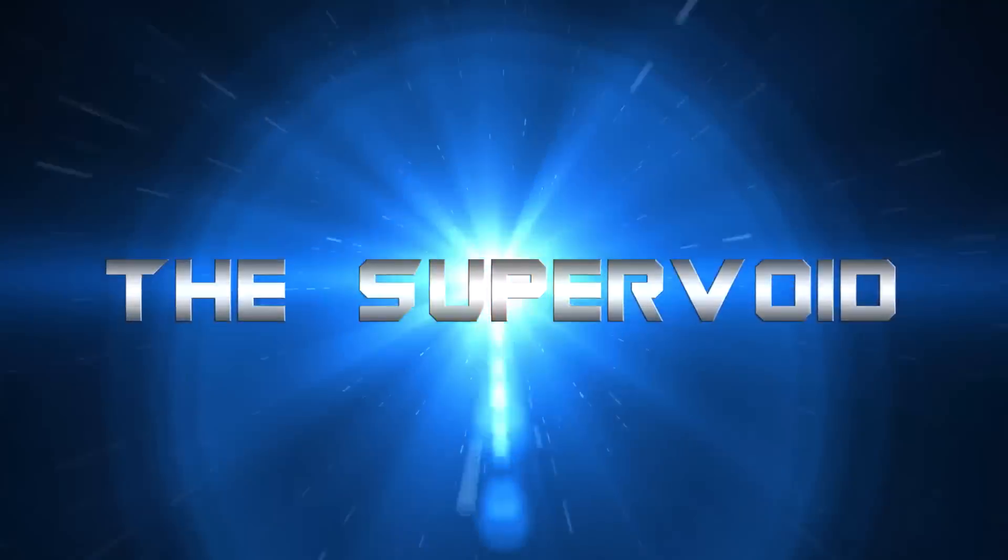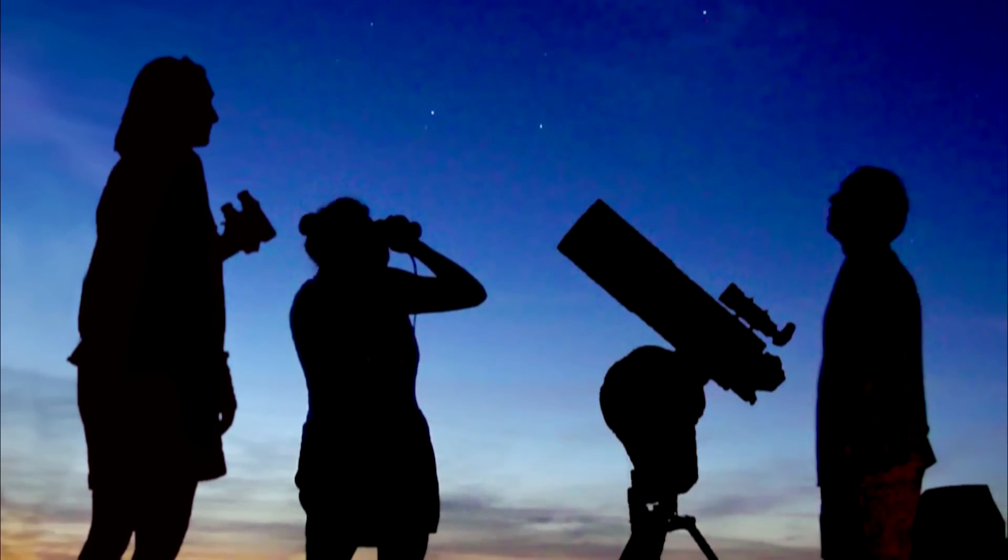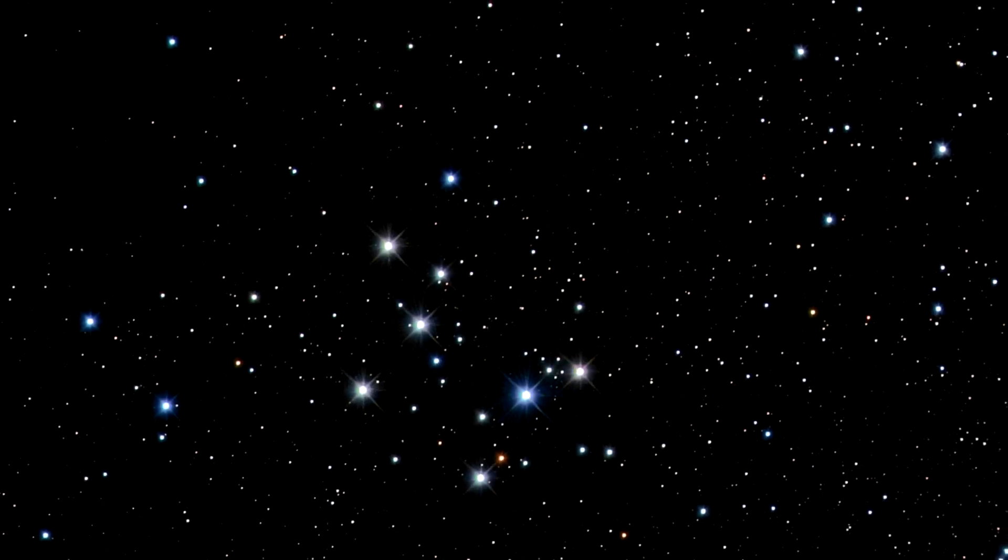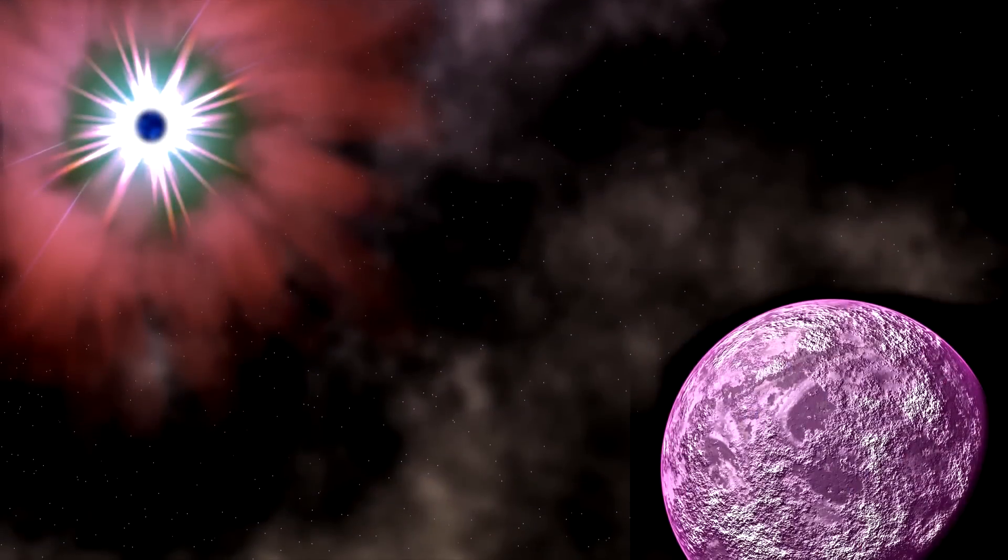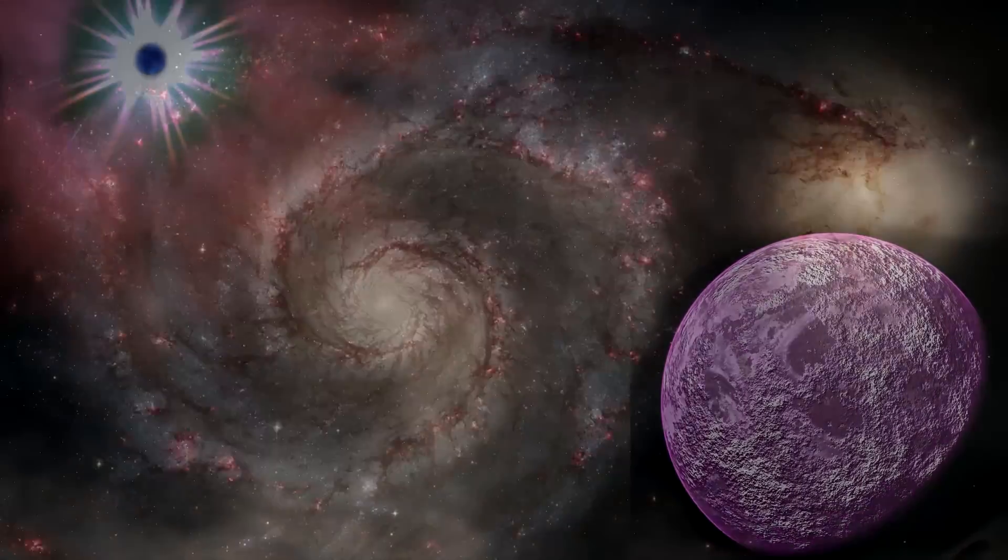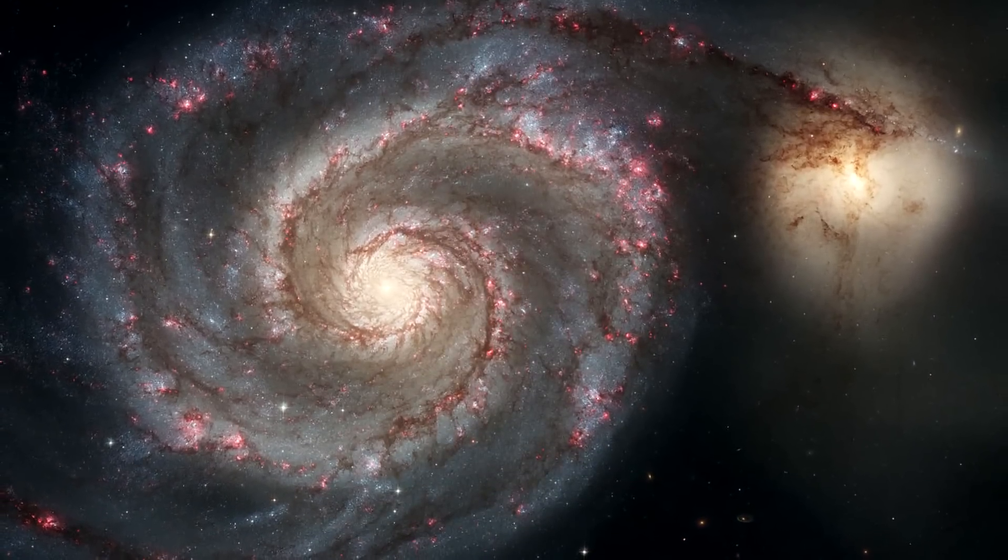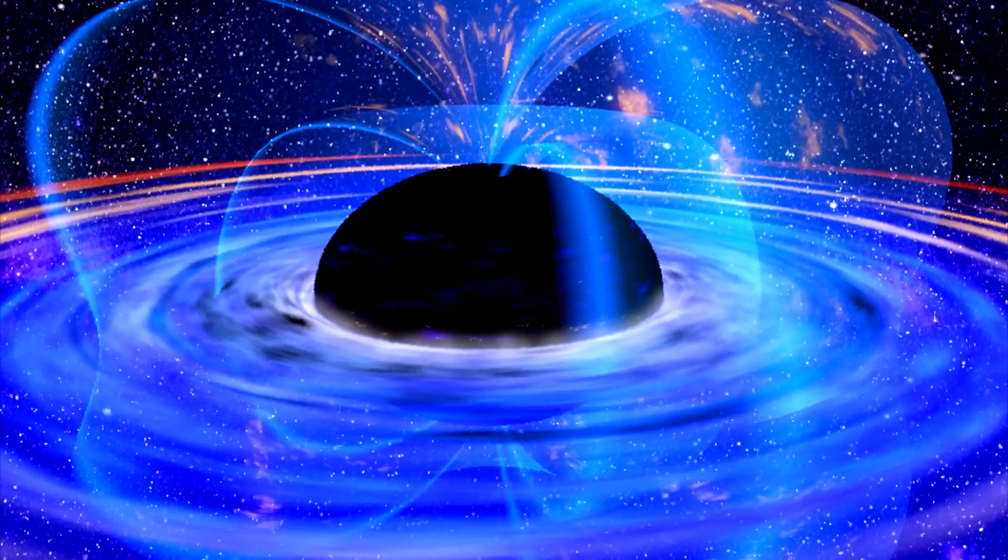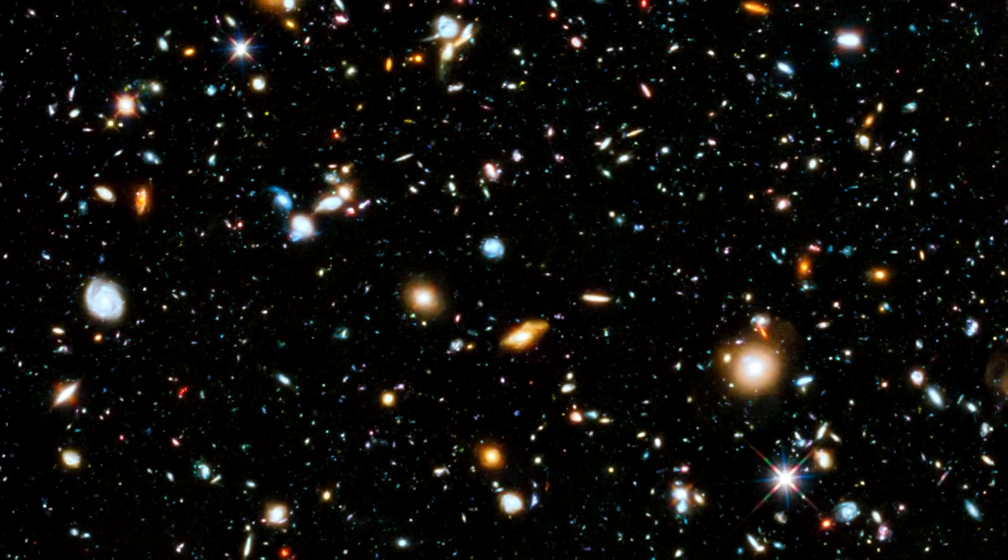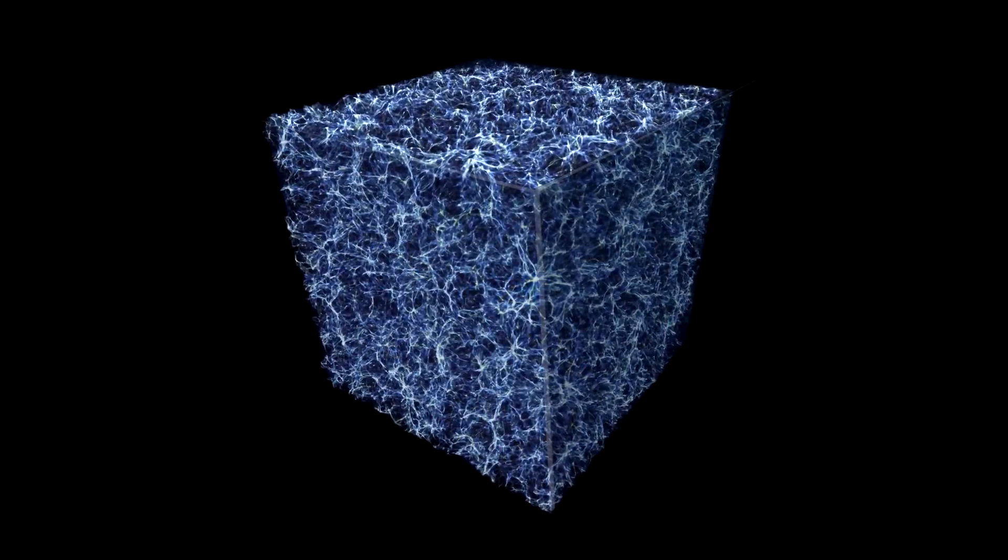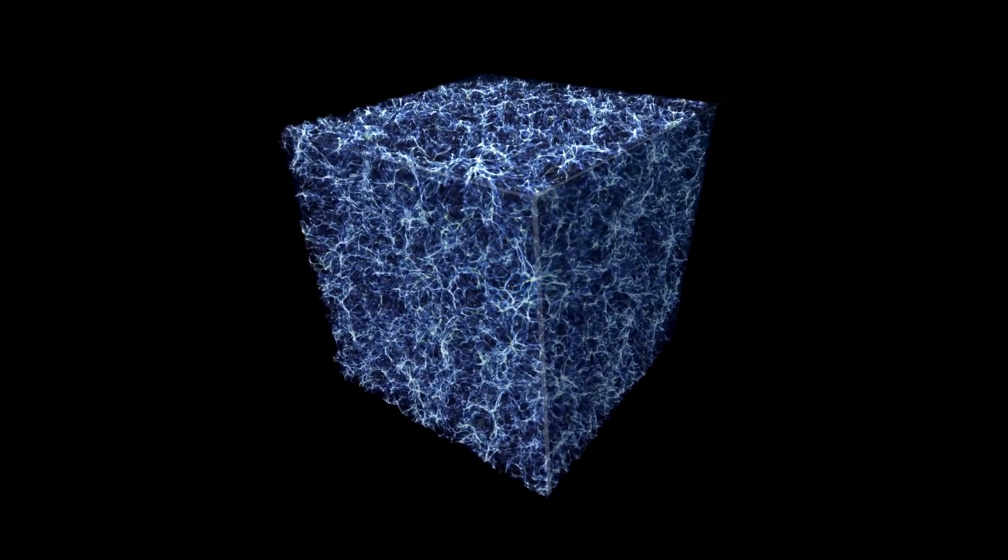The Supervoid. In 2004, astronomers noticed one of the strangest occurrences to date in the observable universe. They saw what they believed to be an uncharacteristically cold spot in the universe that spanned over 1.8 billion light years. This would come to be the largest structure in the universe, and the giant gap was named the CMB Cold Spot, more commonly referred to as the Supervoid.